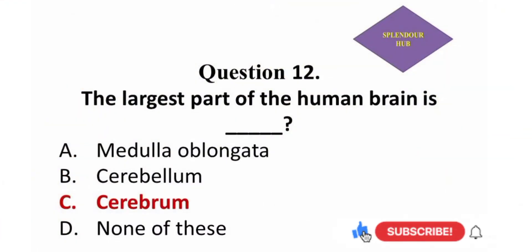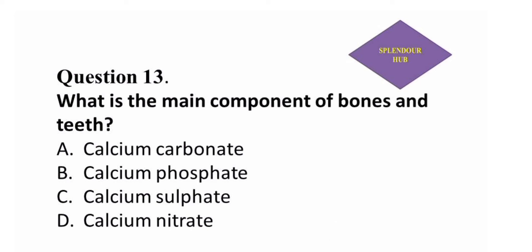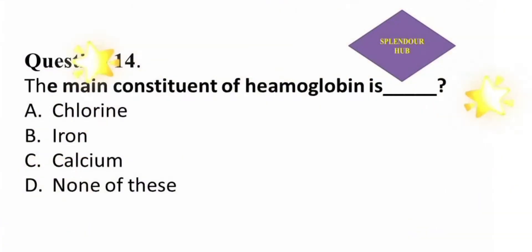Question 13: What is the main component of bones and teeth? — option A: calcium carbonate, option B: calcium phosphate, option C: calcium sulfate, option D: calcium nitrate. Answer: The main component of bones and teeth is calcium phosphate.